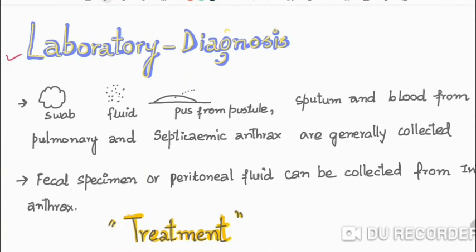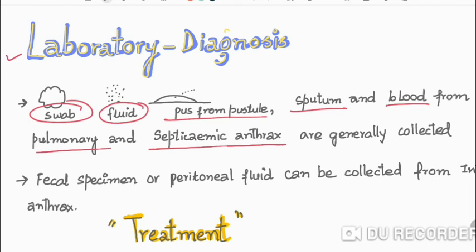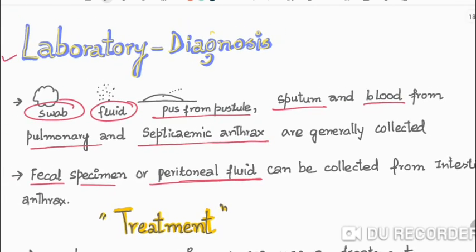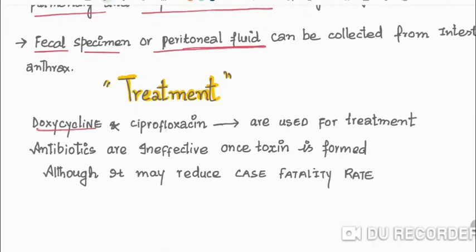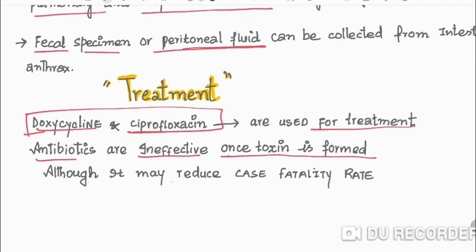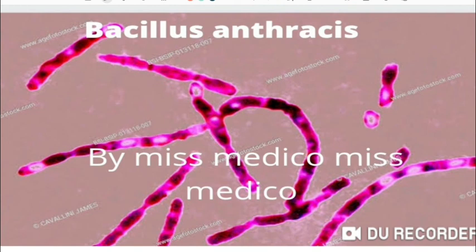For laboratory diagnosis, samples can be collected from swabs, fluid from pustules, sputum, blood from pulmonary and septicemic anthrax, fecal specimens, or peritoneal fluid from intestinal anthrax. Treatment uses doxycycline and ciprofloxacin. However, antibiotics are generally ineffective once the toxin is formed, although they may reduce the case fatality rate. Thank you so very much.